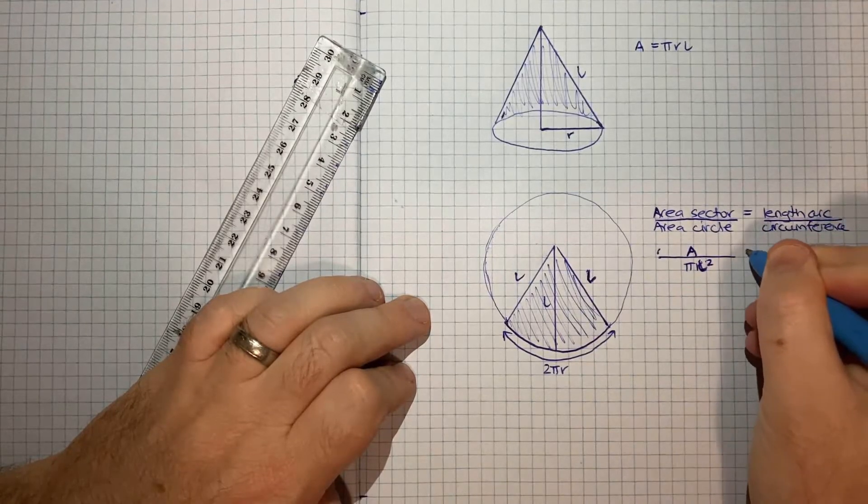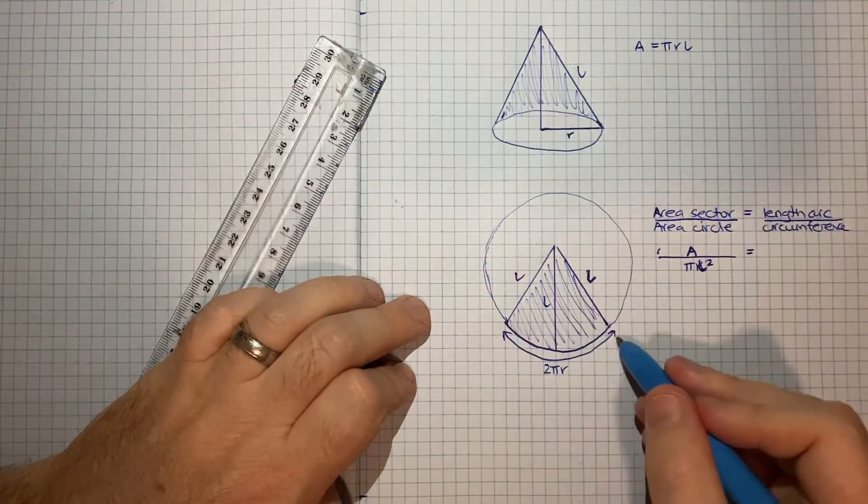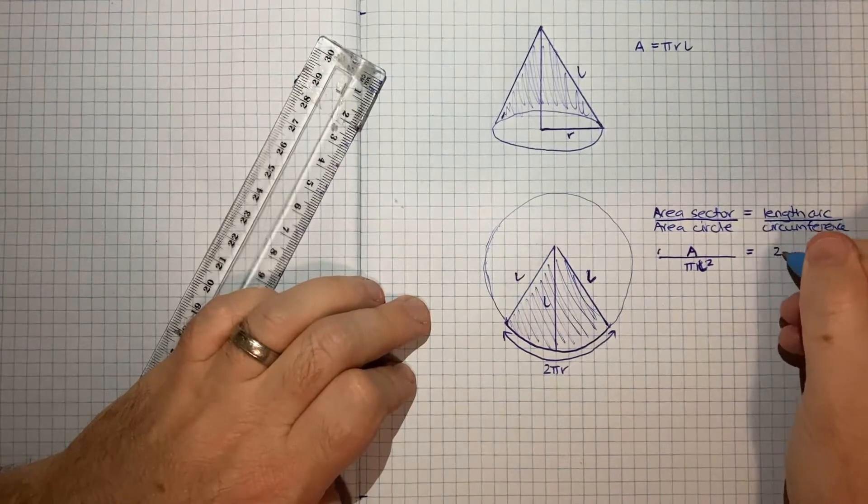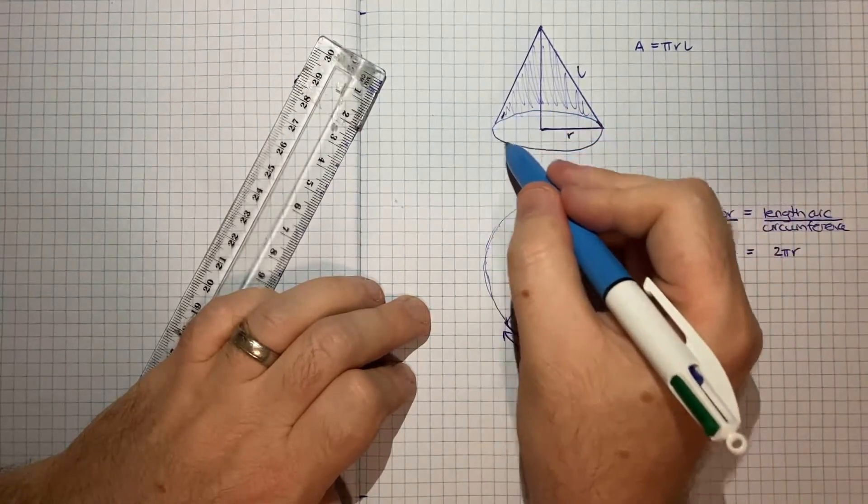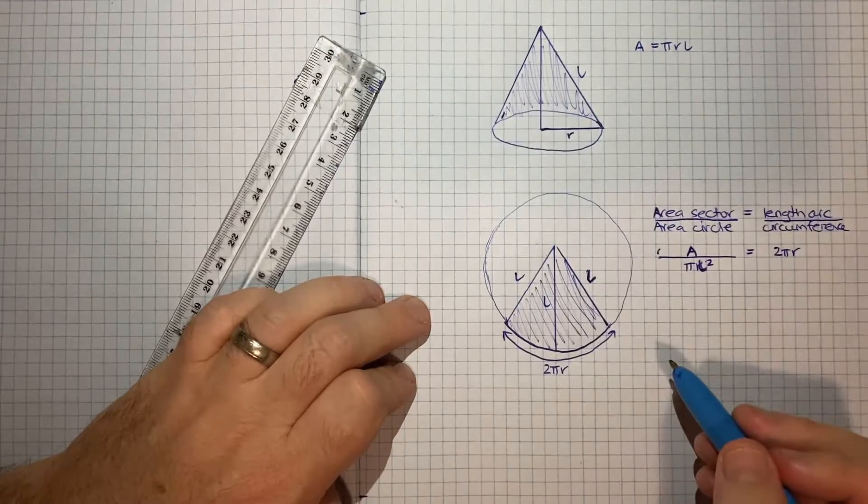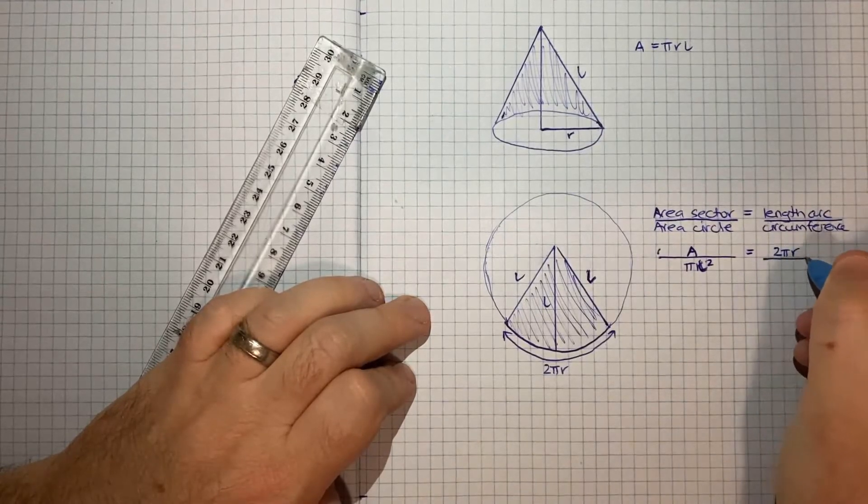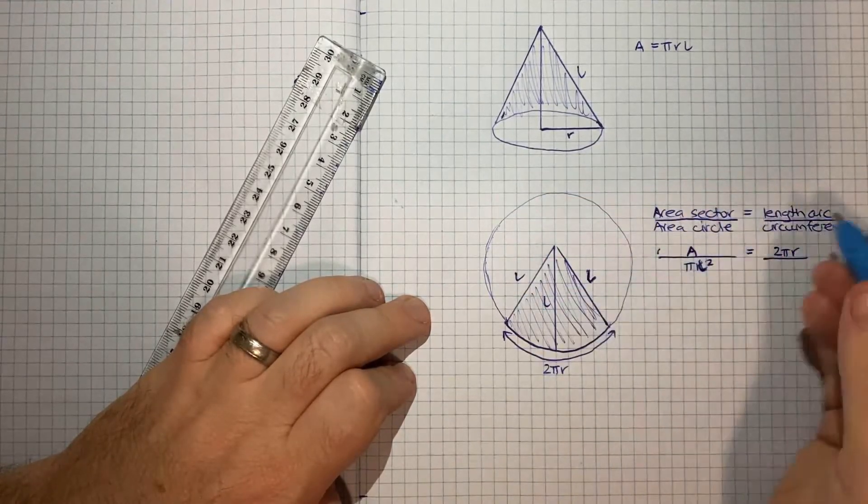That is going to be equal to the length of this arc, which we know is 2 pi R because it has to wrap around this circle, divided by the circumference of this circle, which would be 2 pi L.